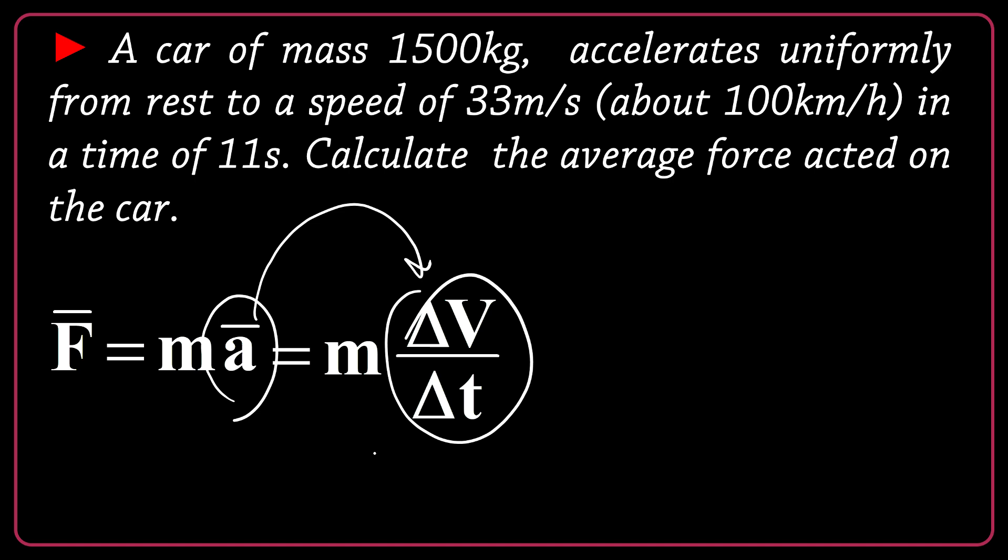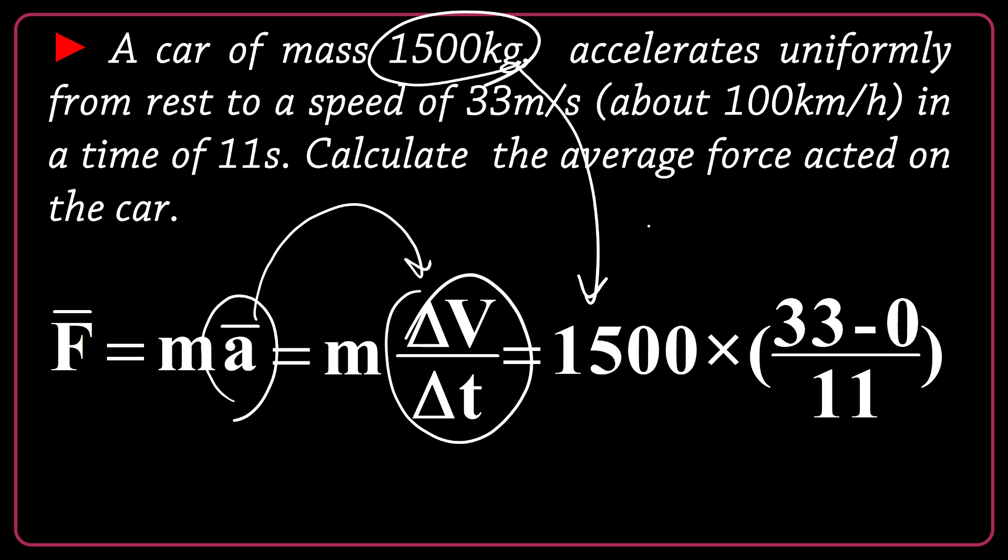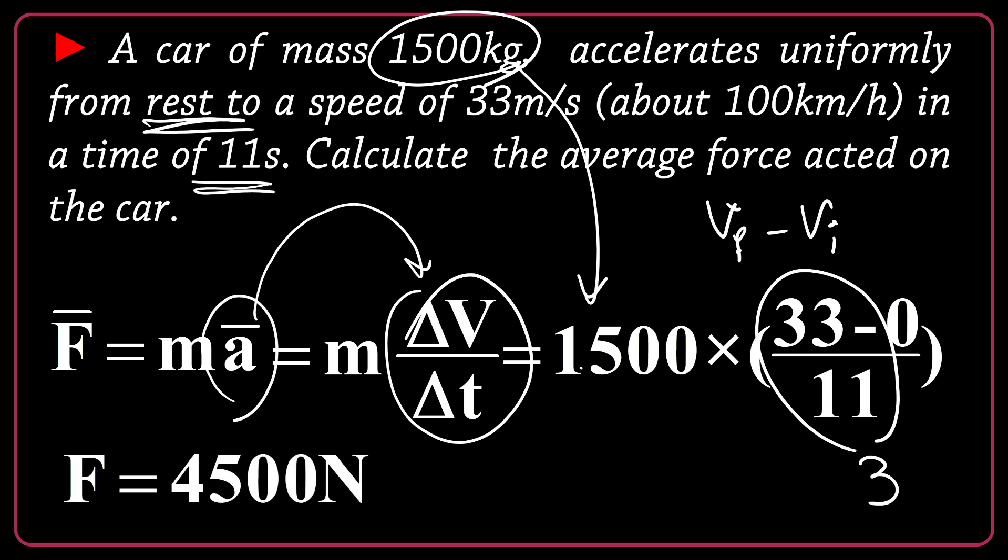So let's substitute the values. Here the total mass of the car is 1500. Here delta V is V final minus V initial. V final is 33 and V initial is zero because the object started from rest. And the total time interval is 11 seconds. So here I can have a 3 and 3 multiplied by 1500 would be 4500 newtons. This is the average force, average net force acting on the object.